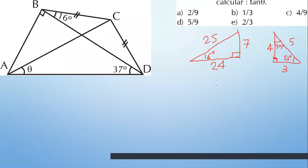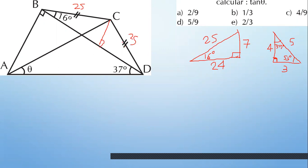¿Qué otro triángulo puedes recordar? Aquí tienes 16. No te han dado lados, pero te están pidiendo tangente, que es solo un número, una proporción sin unidades. Cuando pongas los lados, puedes escribir cualquier valor siempre y cuando se mantengan las proporciones. ¿Quién es 16? Ponle aquí 25. ¿Por qué? Porque si trazas la altura en el isósceles, cae en el punto medio. 24 quedaría acá, 7 esta altura, y 24 lo que sobra. El triángulo ABD es el de 37, 90, 53.